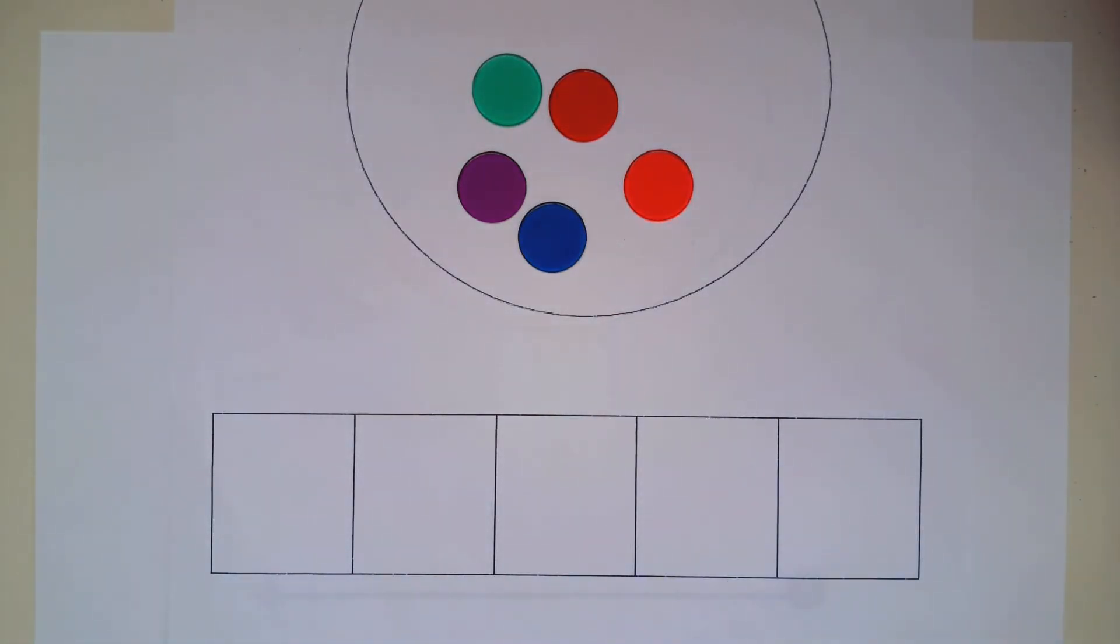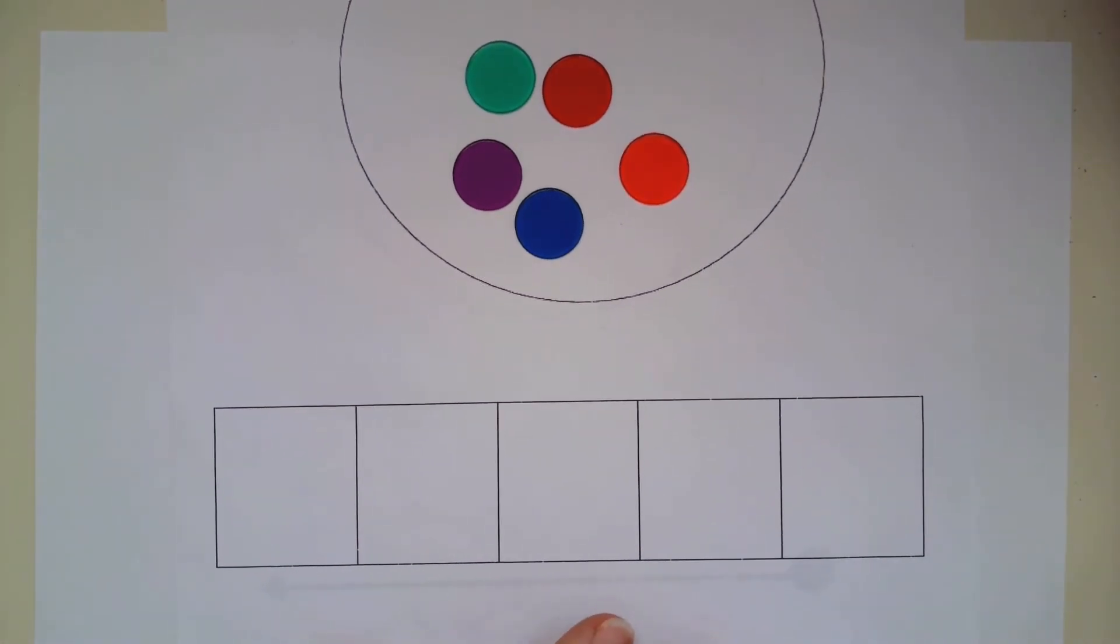I like to use game chips or Unifix cubes. I'm going to model how we would progress to having the student take the letters away and use these manipulatives.